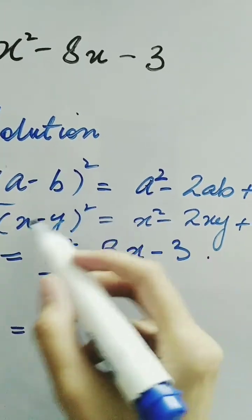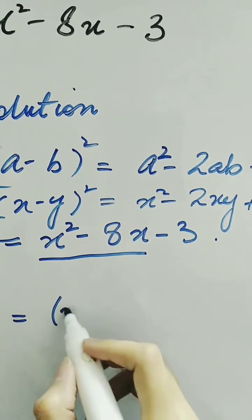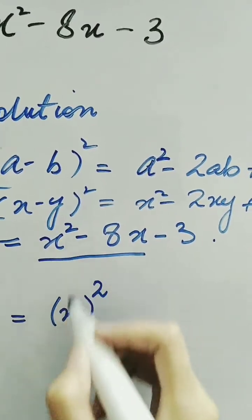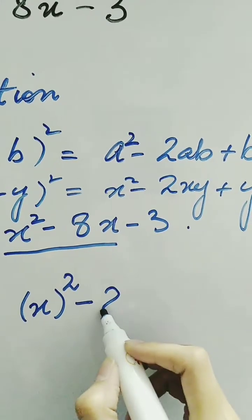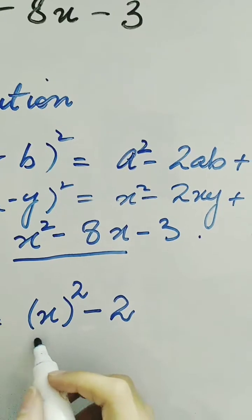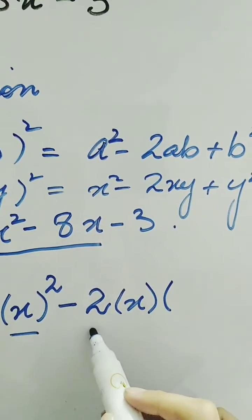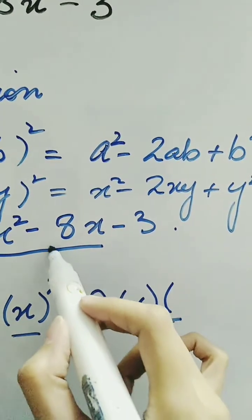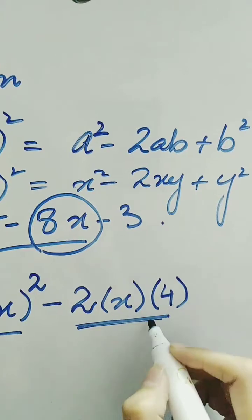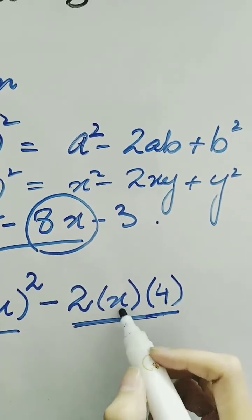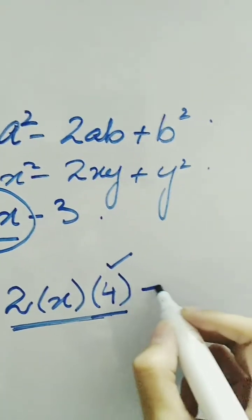We start converting this by noting that x squared gives us the first term. Using the minus sign, we know that the second term is x squared minus 4. The 2 comes from the formula, and a is x. In order to produce a product equal to 8x, we multiply 2 by x by 4, giving us 8x. So b comes out as 4.